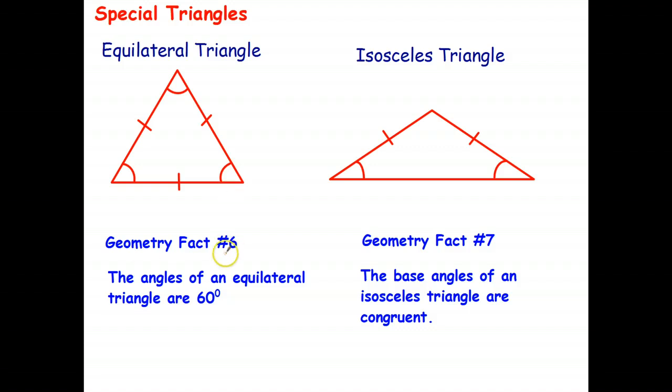So geometry fact number six, the angles of an equilateral triangle are 60 degrees. An isosceles triangle has two sides the same length.